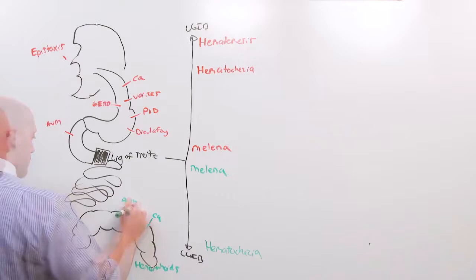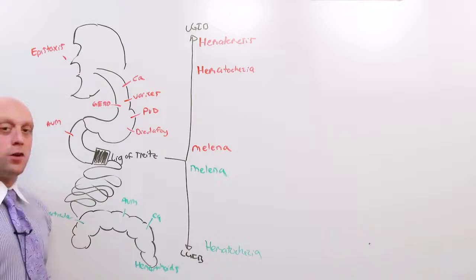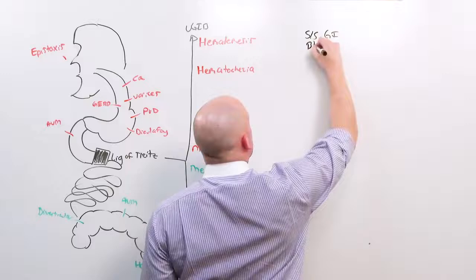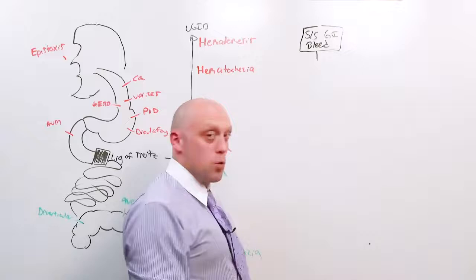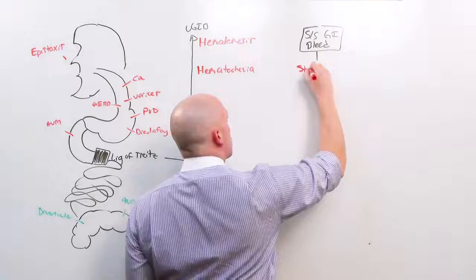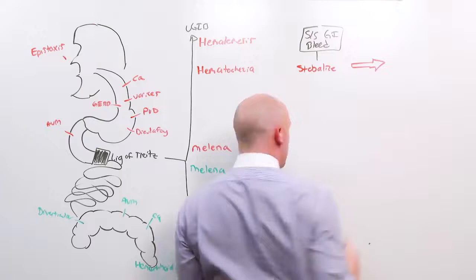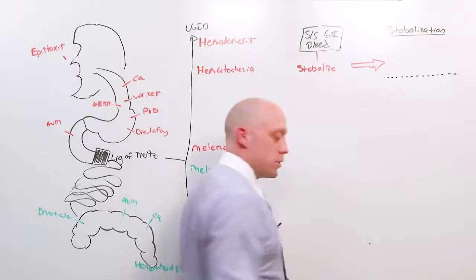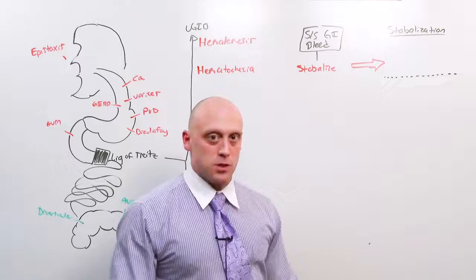So if you have all these potential diseases, how do you figure out which one it is if you can't use the history to your advantage? Well, if someone comes in with the signs and symptoms of a GI bleed, you're going to do the same thing in the same order regardless if you think it's upper or lower. The first thing is going to be stabilize. What is stabilization?